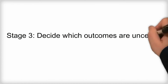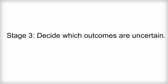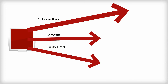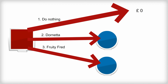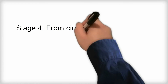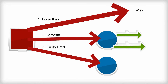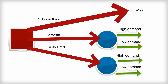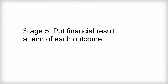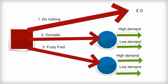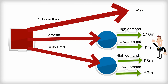Stage three: think about whether the outcome of an option is certain or not. Where the outcome is certain, as applies to 'do nothing' here, extend the line to the far right and write the financial outcome at the end — in this case, zero. Where the outcome is uncertain, draw a circle at the end of that line. Stage four: from any circle, draw lines to the right representing possible outcomes and label them, for example high or low demand. Stage five: at the end of the lines, write the estimated financial result, or payout, of each outcome.